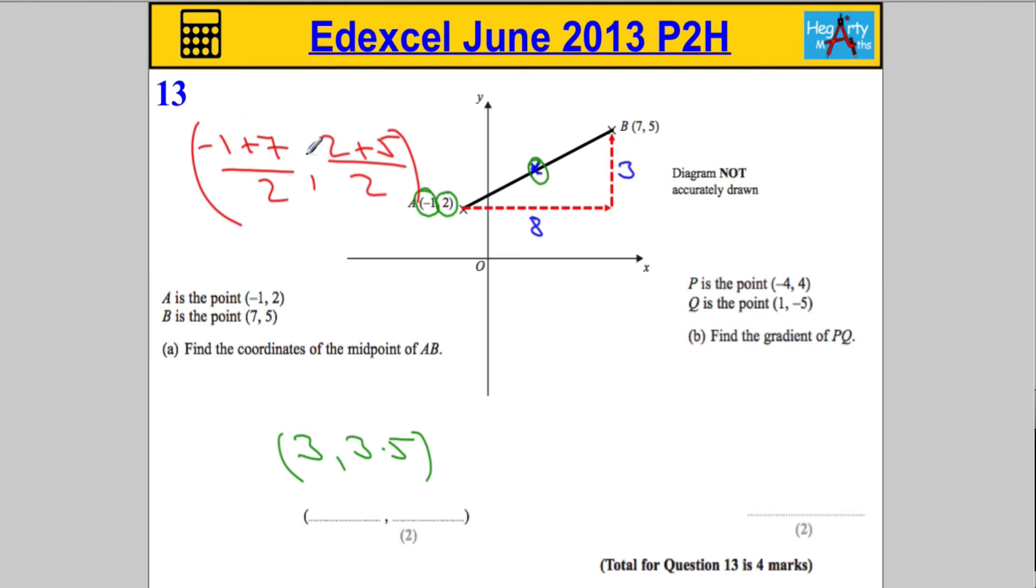You'll notice negative 1 plus 7 is going to give me 6. 6 divided by 2 is 3. And 2 plus 5 is 7. 7 divided by 2 is 3.5.